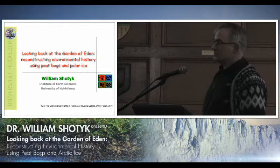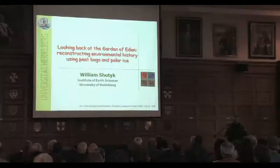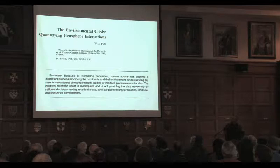Today I'm going to look back at the Garden of Eden. I'm not going to deal with the question of whether or not there was a Garden of Eden — there are other people on campus better qualified to answer that. What I want to do is try to imagine what it was like in the past as regards air and water, and I will do that using peat bogs and using polar ice. I want to start with this paper published in Science in 1981 by Bill Fyfe.